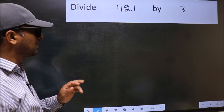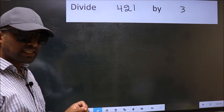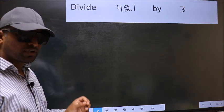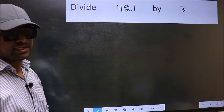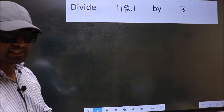Divide 421 by 3. While doing this division, many do this mistake. What is the mistake that they do? I will let you know. But before that, we should frame it in this way.